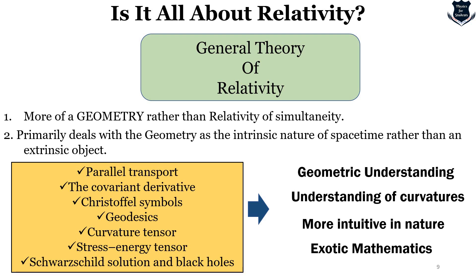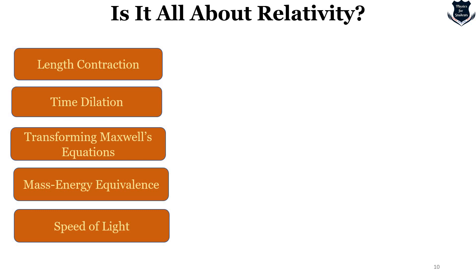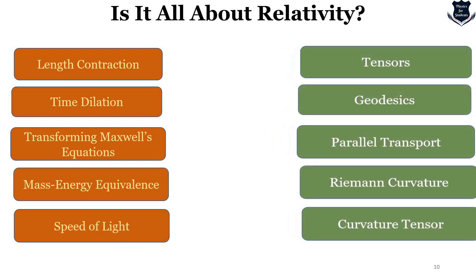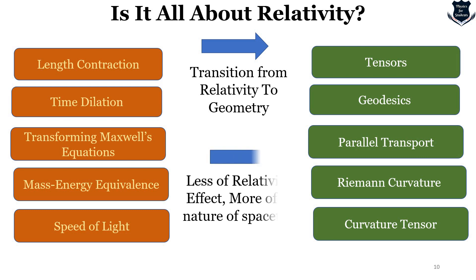It is more intuitive in nature and contains a lot of exotic mathematics — new mathematics developed through the ages that we need to learn in order to learn General Relativity. Geometry requires more intuitive understanding and demands more exotic mathematics. To summarize: length contraction, time dilation, transforming Maxwell's equations to Special Relativity, speed of light — on one side — and on the other side we get tensors, geodesic, parallel transport, Riemann curvature tensor. This is the transition from relativity to geometry: less of relativistic effect, more of the nature of spacetime. It is not textbook relativity, but the geometrical structure of spacetime.